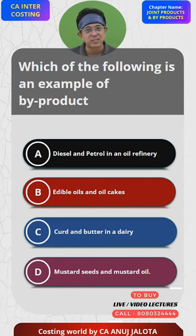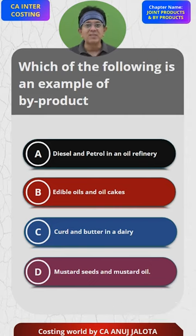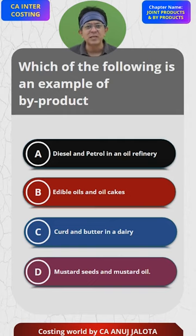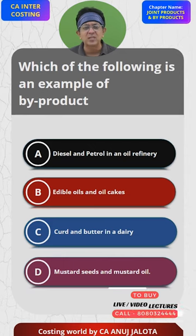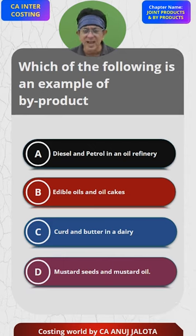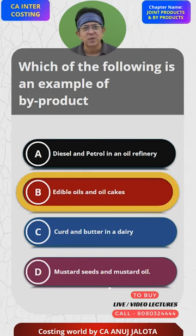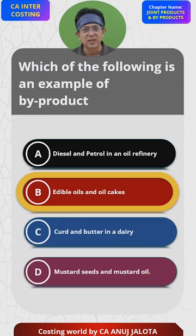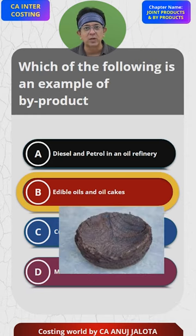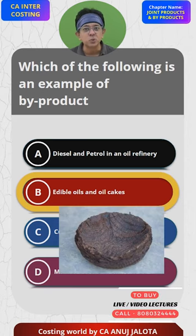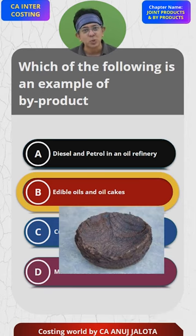Whenever oil is made, whatever is left out gets converted into oil cakes. Oil cakes are used as food for animals and also as fodder for fish. This is what oil cakes look like if you search for them. So B — edible oil and oil cakes — is the correct answer.